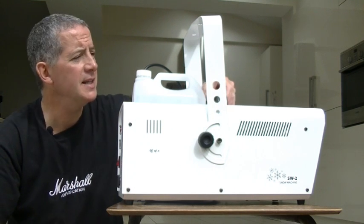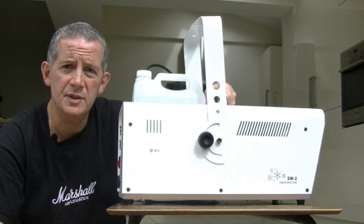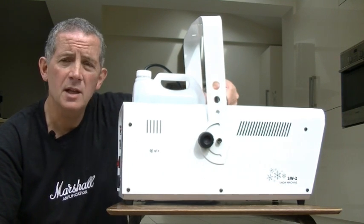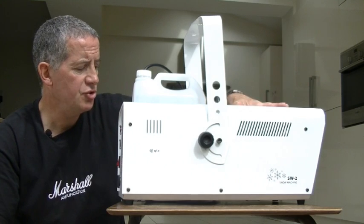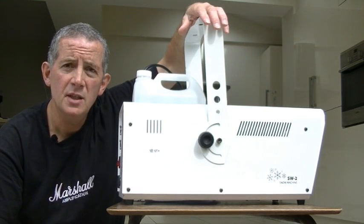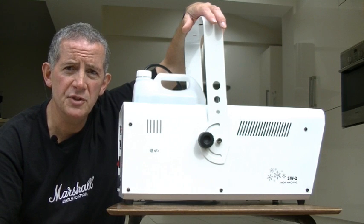It weighs in at 9 kilograms, that's 20 pounds. So it's a fairly heavy unit but it can be picked up using one hand with the handle at the top. It has a strong metal chassis. On the top here you will see a bracket which is used to hang the unit from trussing.